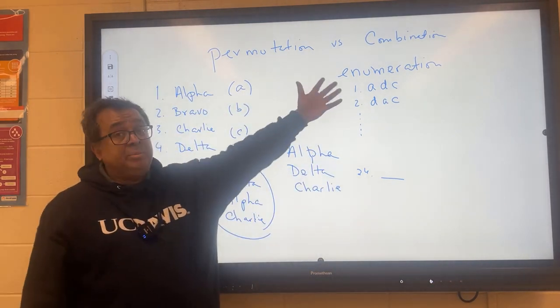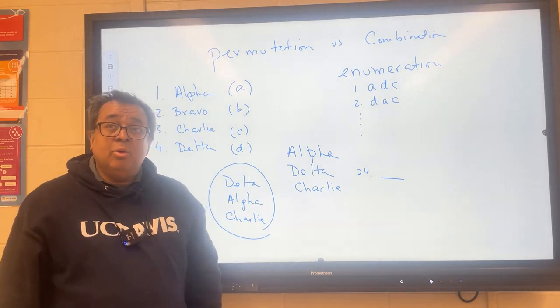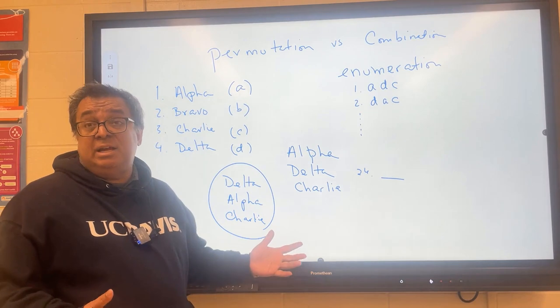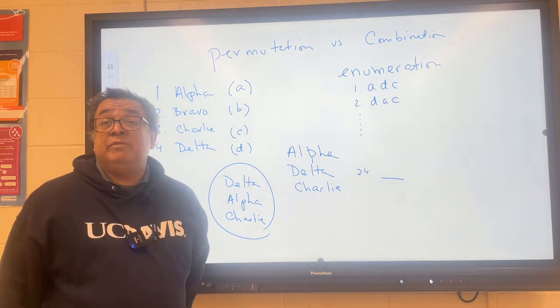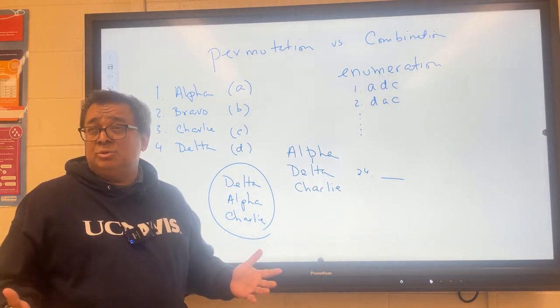Now enumeration is a perfectly valid mathematical technique for finding the answer to a problem. What's dangerous about it? It's hard to tell if you've accidentally skipped one. It's also hard to tell when you're finished. Like you may have all 24 and you're like scratching your head, did I forget any? I'm not really sure.